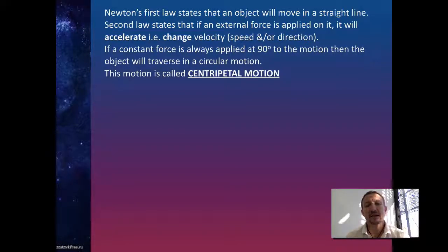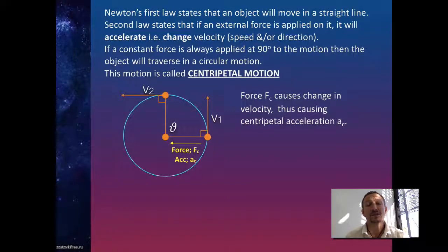Now, what we notice is that if we apply a force on a moving object, which is at 90 degrees to the motion and continue it, then what will happen is that object will move in a circular motion. And we call this centripetal motion. So you can see here that we've got an object shown with the orange blob, which is moving at a velocity V1.